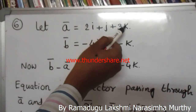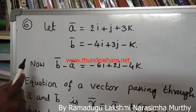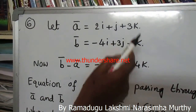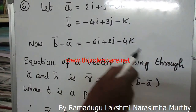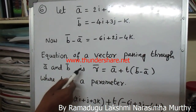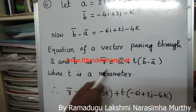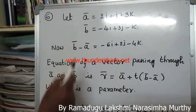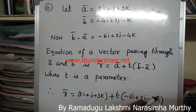Given ā = 2i + j + 3k and b̄ = -4i + 3j - k. Then b̄ - ā = -6i + 2j - 4k. The equation of a line passing through ā and b̄ is r̄ = ā + t(b̄ - ā), where t is a parameter. Therefore r̄ = (2i + j + 3k) + t(-6i + 2j - 4k).